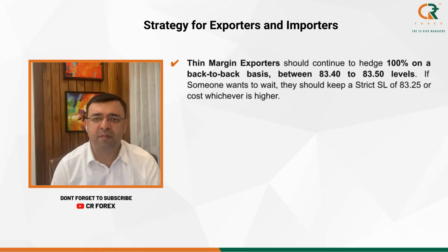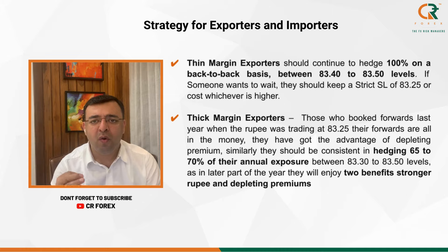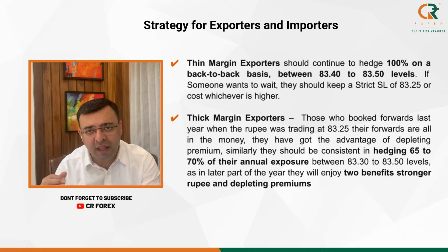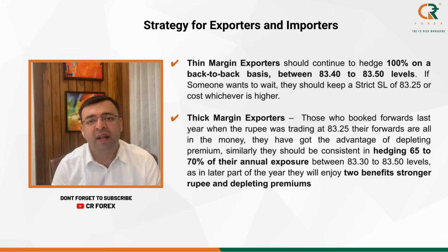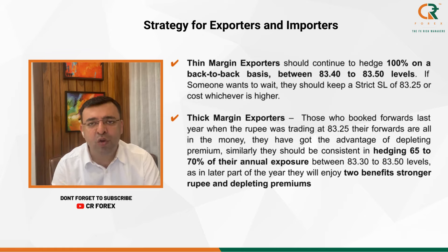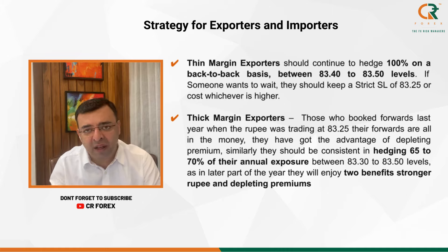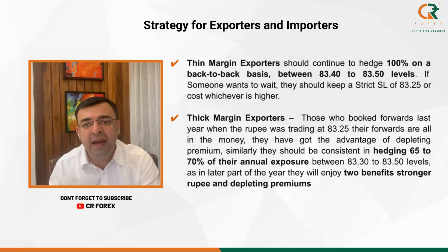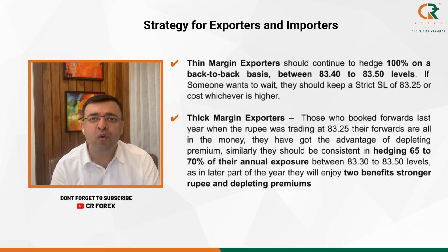For thick margin exporters like textile or pharma exporters, who generally book one-year forward contracts — those who booked forward last year when the Rupee was near 83.25 are currently enjoying all their forwards being in the money. We suggest that between 83.30 to 83.45, they should continuously hedge 65 to 70 percent of their annual exposure, as in the later part of the year they will benefit for two reasons: the Rupee is going to become stronger, and depleting forward premium will also help them.